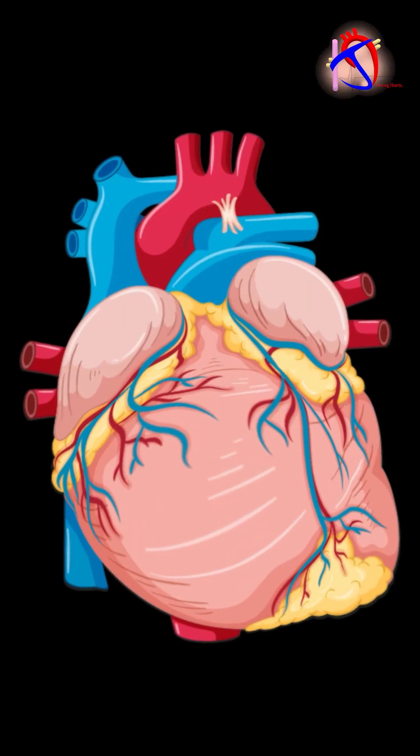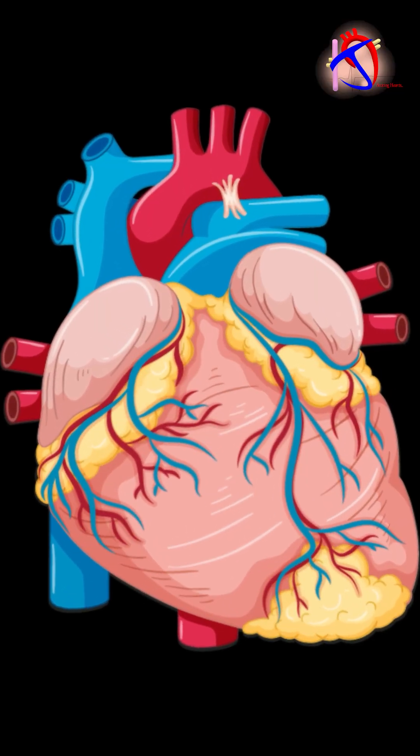And then from the lungs, it goes to the left side of the heart through four pulmonary veins. It drains into the left atrium, and from the left atrium, it drains into the left ventricle.